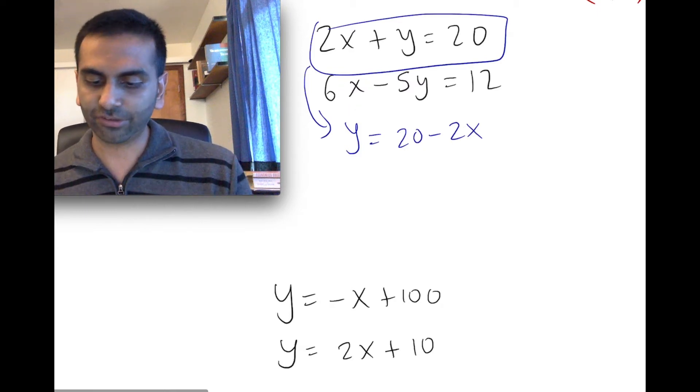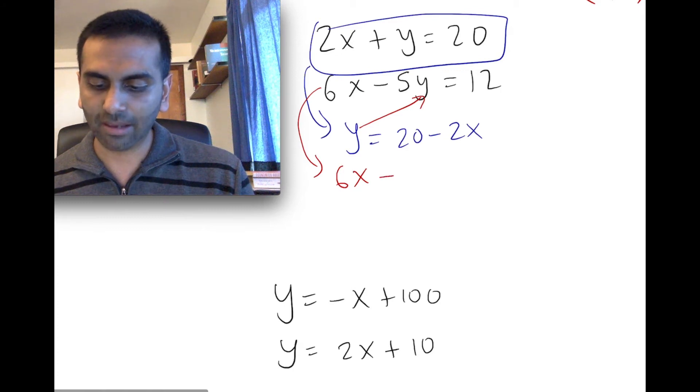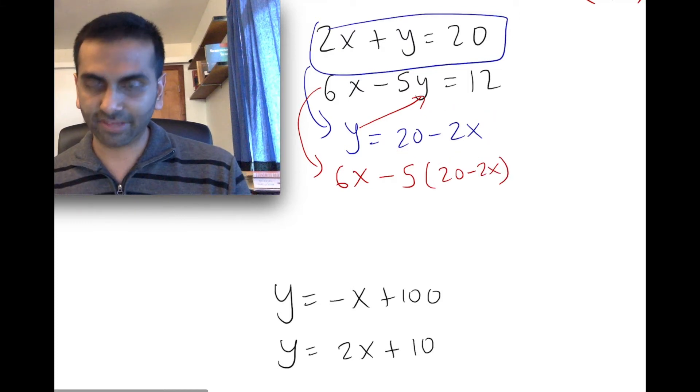So plugging that in here, this equation then becomes, so I'm just transcribing it down, 6x - 5y. The y is really 20 - 2x. So 6x - 5y equals 12, right?